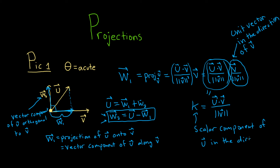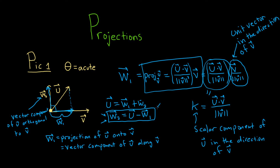There's a lot of terminology when it comes to projections, and people often think projections are confusing, but it's not really that bad. All you have to do is use this formula to find w1, and then use w2 = u minus w1 to find the vector component of u orthogonal to v. Let's go ahead and do a simple example of computing a projection.